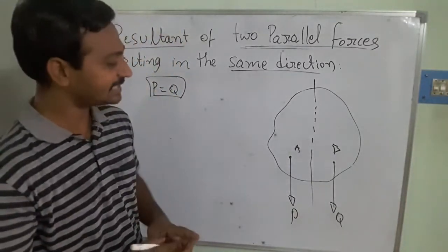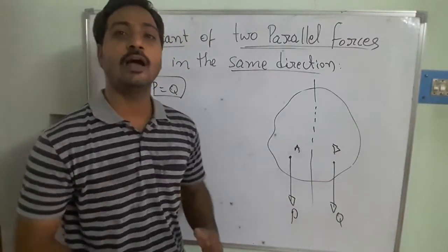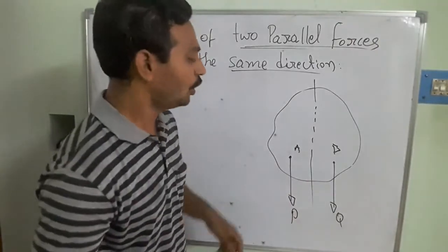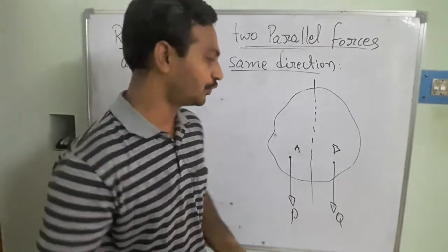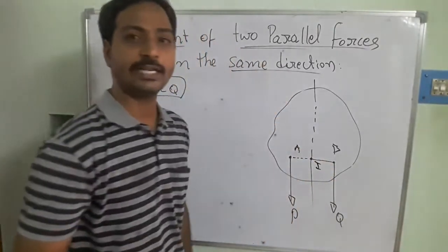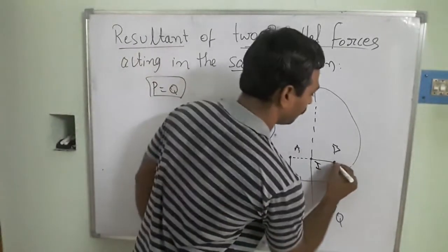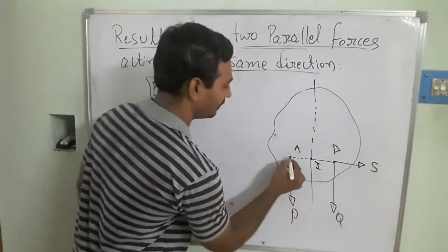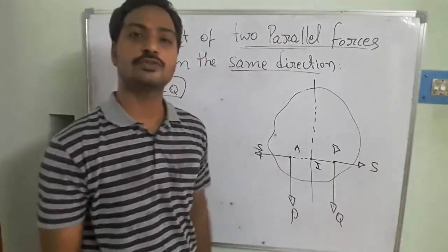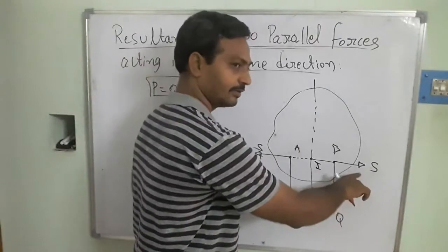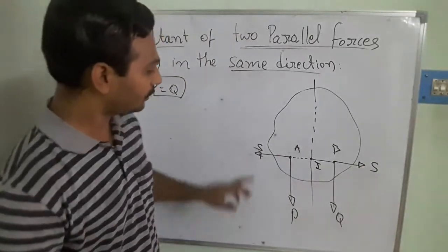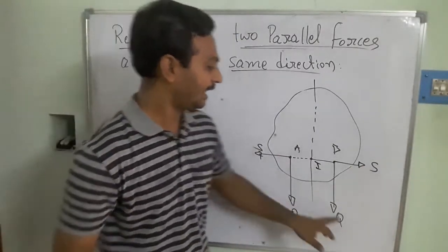For simplification, I am using the superposition principle by adding two forces that are opposite in direction. To find the resultant component, we add two additional forces. Joining these two points, I will call this intersection with the center point I. At point B I am applying load S, and similarly at the other point I am also applying load S. These two are superposition forces acting in opposite directions, and their magnitude S is the same.